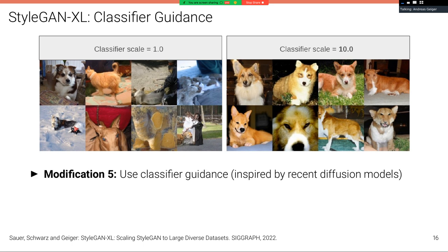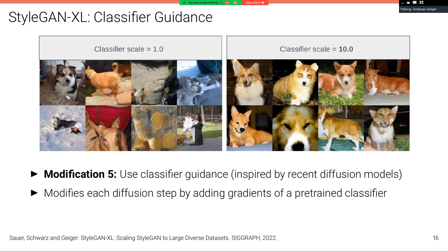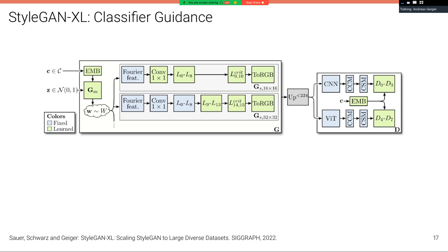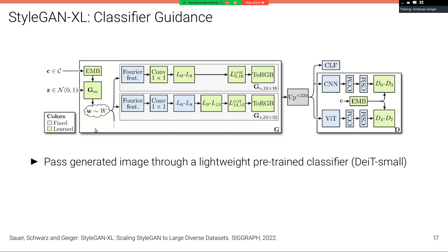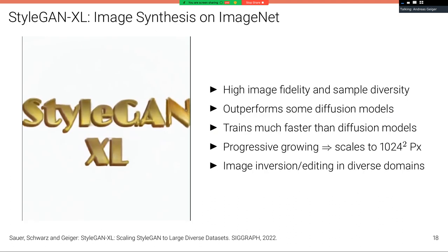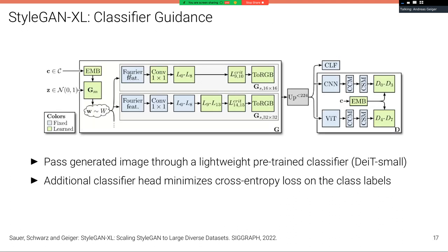And finally, what we add is classifier guidance. Inspired by recent diffusion models which produce great results using classifier guidance, we use the same trick here adapted to the StyleGAN architecture. Classifier guidance in diffusion models modifies each diffusion step by adding gradients of a pre-trained classifier to help optimization, and this leads to significant improved image quality. So we modify this now and adapt it here to StyleGAN. And this is shown here: what we do is we pass the generated image here through a lightweight pre-trained classifier. In our case, a DeiT small classifier here that has been pre-trained. And because we know the class labels, we can just minimize the cross-entropy loss on these class labels, on these predicted class labels. And this gives us an additional gradient here for updating the generator.